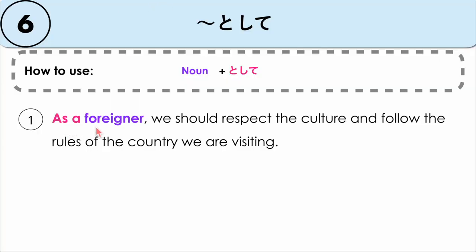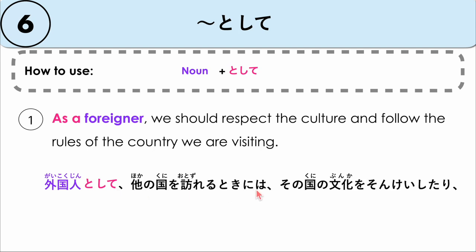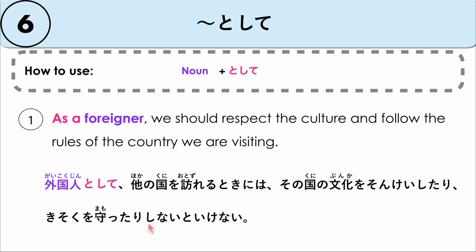For example: as a foreigner, we should respect the culture and follow the rules of the country we are visiting. Here we have the noun 'foreigner,' so as a foreigner — meaning in the role of a foreigner — this is what we should do. Gaikokujin toshite hokano kuni wo otozureru toki niwa, sono kuni no bunka wo sonkei shitari, kisoku wo mamottari shinai to ikenai.